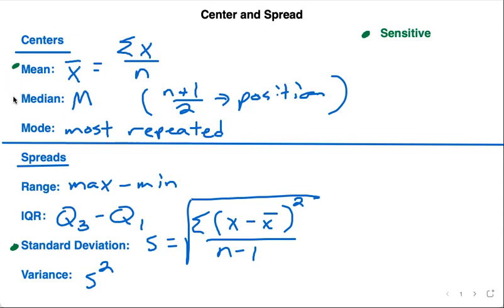The ones that are not sensitive, the ones that are resistant, are going to be the median and the IQR, because those are placeholders. Those are going to end up being only affected by positions. They're called resistant to outliers.